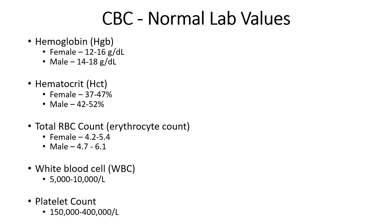Normal CBC lab values: Hemoglobin (HGB) measures the gas-carrying capacity of the red blood cell. Low levels may signify anemia, low iron, or internal bleeding. High levels may indicate overproduction of red blood cells, heart/lung/liver disease, or dehydration. Normal range is 12-16 g/dL in females and 14-18 g/dL in males. Hematocrit measures the percentage of total blood volume — packed cell volume of red blood cells — with normal ranges of 37-47% in females and 42-52% in males.